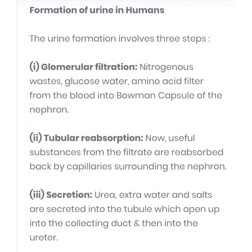Then comes secretion, which is the main part. Urea, extra water, and salts are secreted into the tubule, which opens up into the collecting duct and then into the ureter. In this way the final urine is formed, which is pale yellow in color.